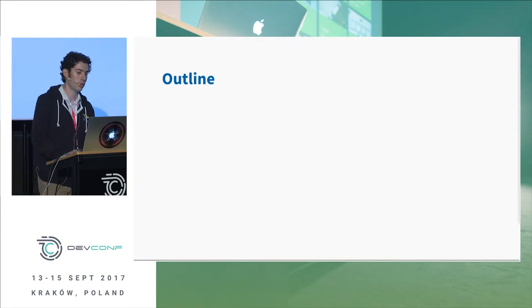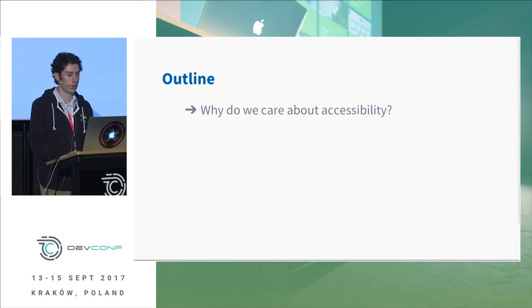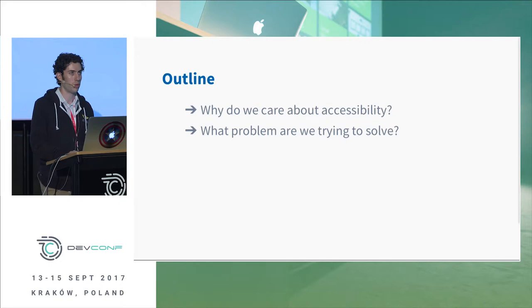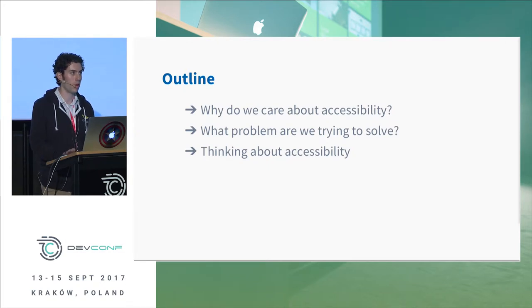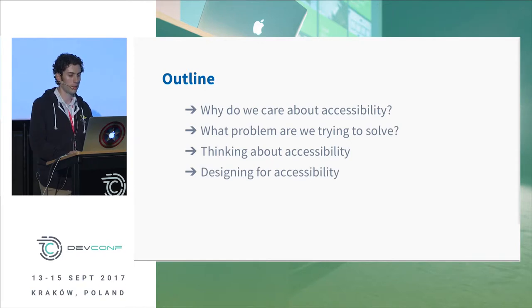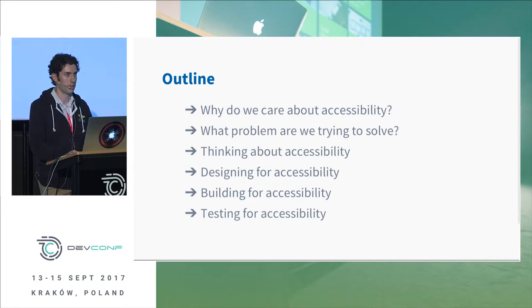The outline of this talk: first we'll discuss why we care about accessibility and why it's a problem worth solving. Then we'll look at what type of problem we're trying to solve. Then we'll talk philosophically about how we approach the problem. And then we'll look at design considerations, building considerations, and testing considerations.